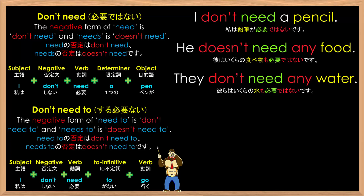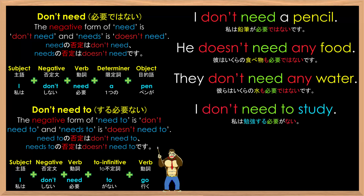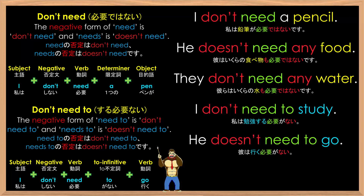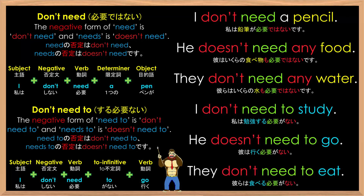The negative form of need to is don't need to, and needs to is doesn't need to. For example: I don't need to study. He doesn't need to go. They don't need to eat. Just like above, don't and doesn't are used, and you don't need to add an S to need.